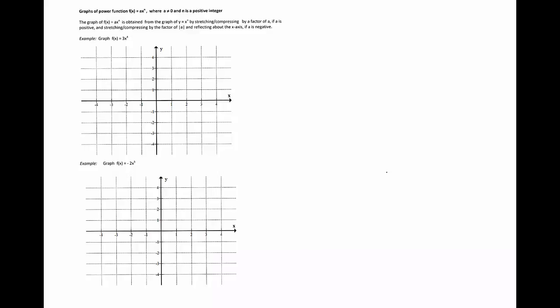To graph more general polynomial functions, we will need to know the graphs of the function ax to the power n, where a is not 0 and n is a positive integer. Because this function is formed by multiplying x to the power n by a, to get the graph of f(x) = a times x to the power n, we'll take the graph of y = x^n and stretch or compress it if a is positive, or stretch/compress and reflect about the x-axis if a is negative.